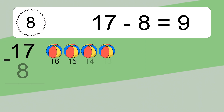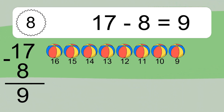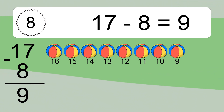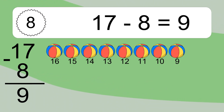17 minus 8 equals what? 17 minus 8 equals 9. Let's count it: 16, 15, 14, 13, 12, 11, 10, 9.